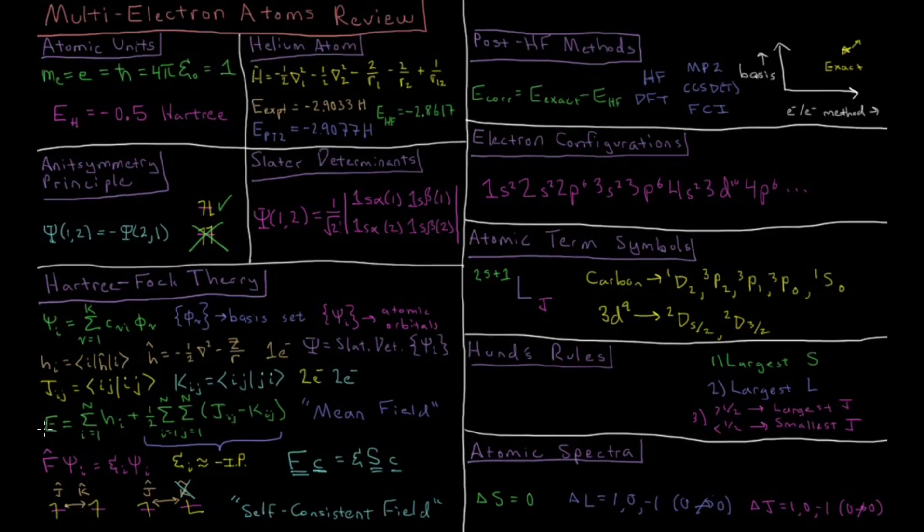Our total Hartree-Fock energy for a given atom is a sum of the one-electron terms. Each electron has a one-electron energy, and then a pairwise sum over all electrons. Each pair of electrons interacts through a Coulomb and exchange integral, provided they have the correct spins.